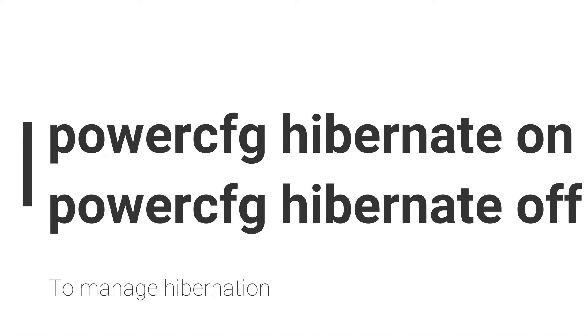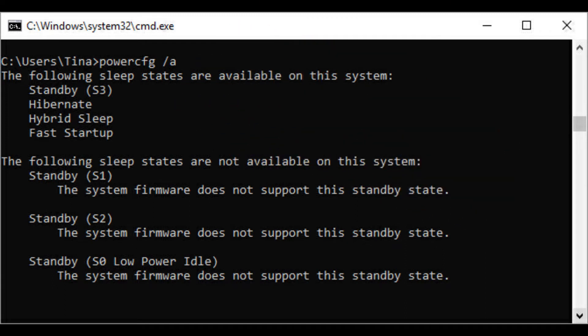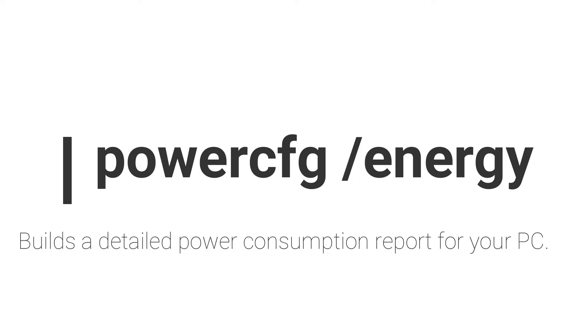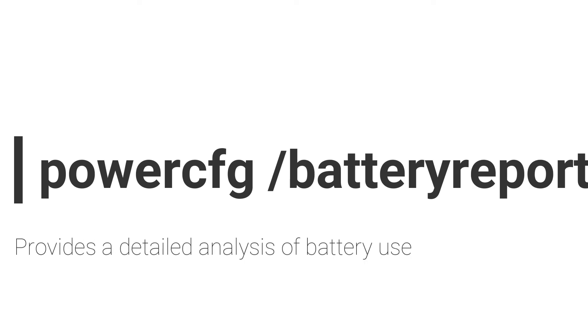The fifth command is powercfg, a very powerful command for managing and tracking how your computer uses energy. You can use powercfg hibernate on and powercfg hibernate off to manage hibernation, and powercfg /a to view the power saving states currently available on your PC. Use powercfg /energy to build a detailed power consumption report. Windows 8 also added powercfg /batteryreport, which provides a detailed analysis of battery use, if applicable.